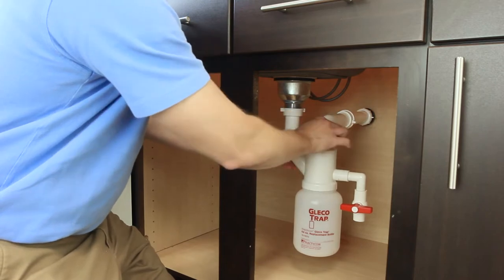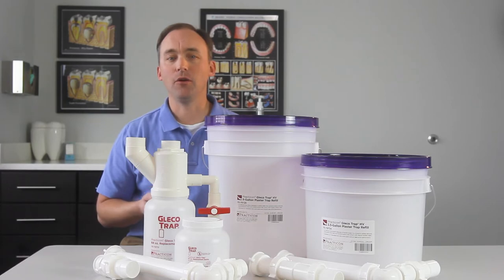Make sure all fittings and gaskets are tight to prevent leaks. It's important to note, if GlecoTrap is installed backwards, it may cause a backup into the sink.